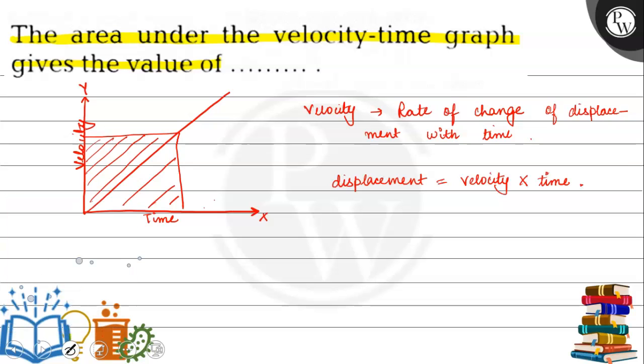Hence, the area under the velocity-time graph gives the value of displacement. The answer is displacement.